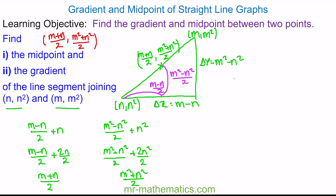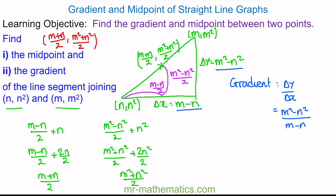Now we'll work out our gradient, which is the change in y divided by the change in x. The change in y we know is m² minus n². We can simplify this fraction by working out the difference of two squares on our numerator, and this is (m minus n) multiplied by (m plus n), all over (m minus n). We can simplify by dividing both by (m minus n), so our gradient is m plus n.